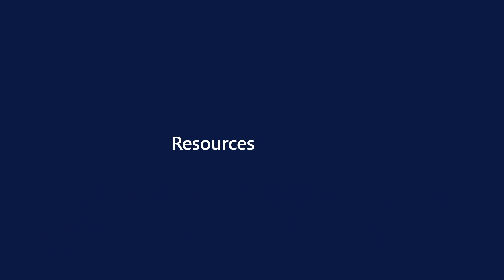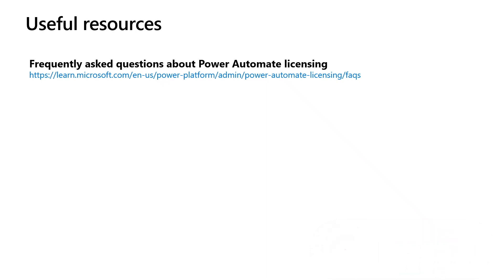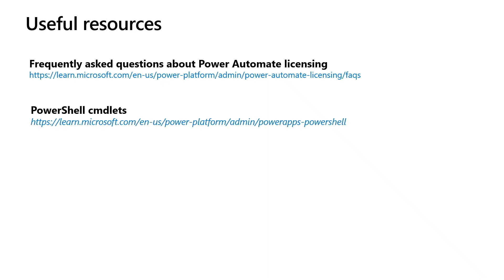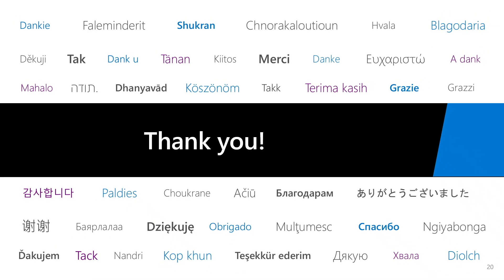Here are some useful resources. The first is one of the most important — it has all the latest information about the licensing enforcement process and timelines. The second is a link to all PowerShell cmdlets related to the Power Platform. The third is the link to the PowerShell scripts I used in this demo — I've uploaded these files to GitHub. Thank you for listening, I hope you found this session useful.